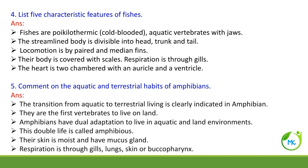Comment on the aquatic and terrestrial habits of amphibians. Amphibians are able to live in both land and water and are the first vertebrates to live on land. They have dual adaptation, hence they are called amphibians. The skin of amphibians is moist and has mucus glands. Respiration takes place by means of gills, lungs, skin, or buccopharynx.